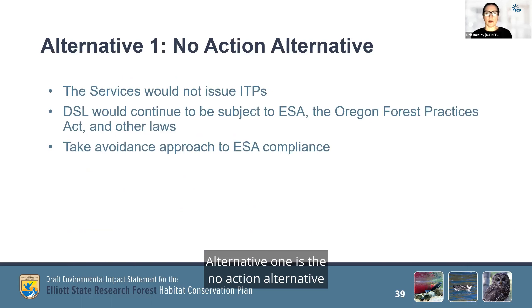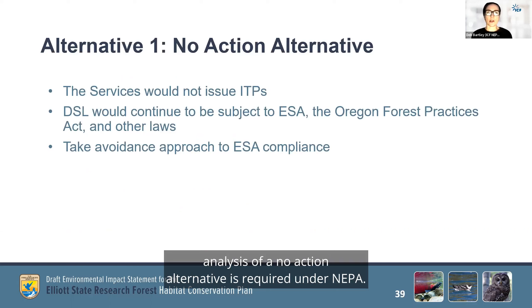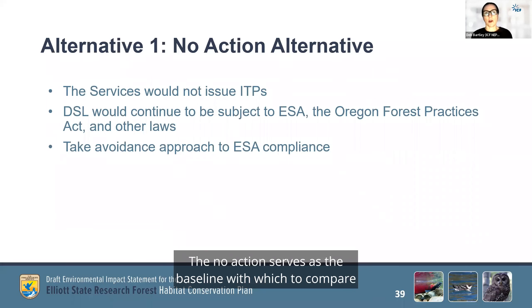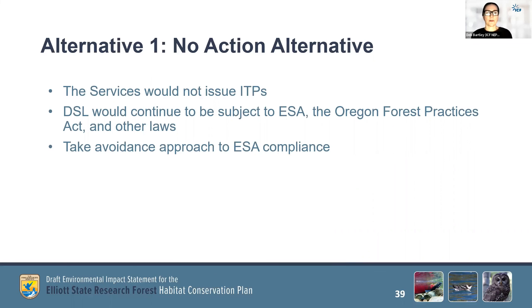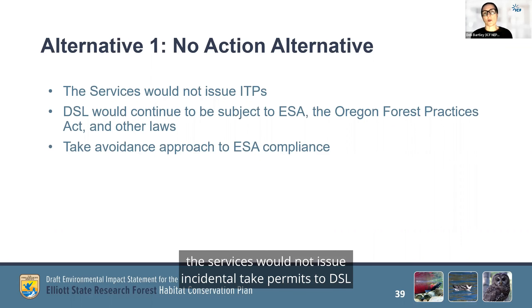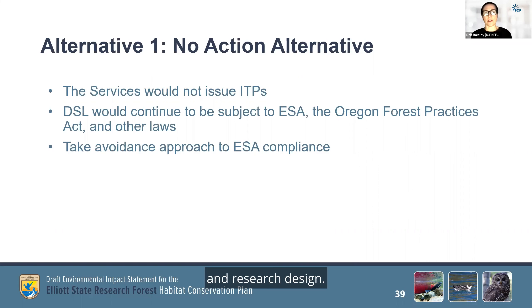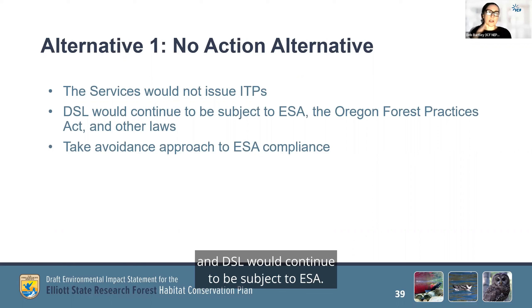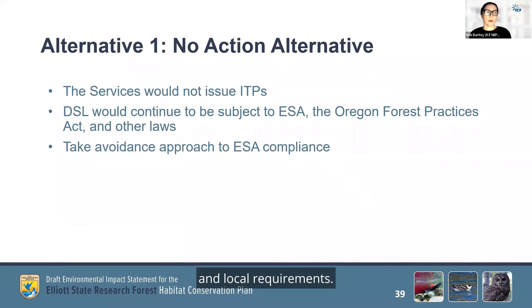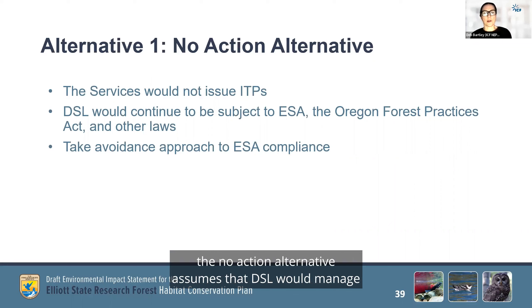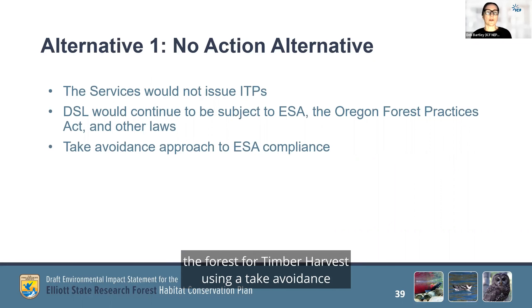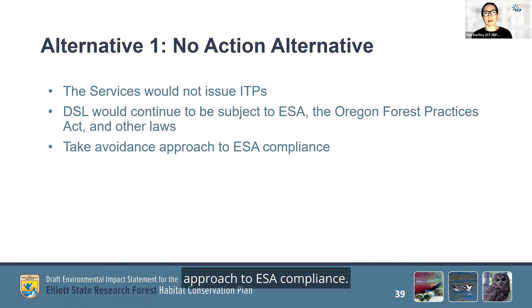Alternative 1 is the no action alternative. Analysis of a no action alternative is required under NEPA. The no action serves as a baseline with which to compare impacts of the proposed action and any action alternatives. Under the no action alternative, the Services would not issue incidental take permits to DSL, and DSL would not implement the proposed HCP and research design. Take of listed species would not be authorized, and DSL would continue to be subject to ESA, the Forest Practices Act, as well as other federal, state, and local requirements. For purposes of analysis, the no action alternative assumes that DSL would manage the forest for timber harvest using a take avoidance approach to ESA compliance.